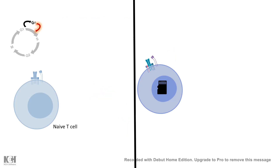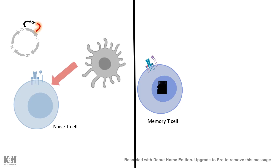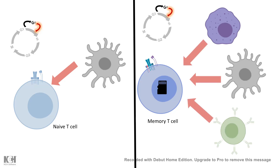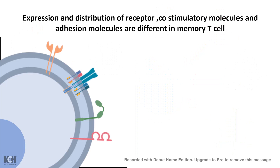Naive T cells only accept stringent instructions from dendritic cells to become activated, whereas memory T cells have less stringent requirements and can receive activation signals from macrophages, dendritic cells, or even B cells. Molecularly, this is possible because the surface distribution of receptors, co-stimulatory molecules, and adhesion-based receptors is very different in memory T cells. The T cell receptors are clustered in memory T cells, leading to quicker and easier activation, and the distribution of co-stimulatory receptors also differs compared to naive T cells.